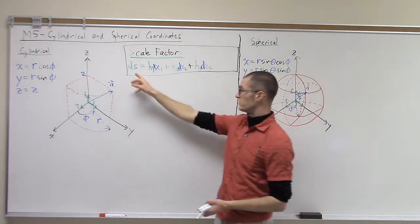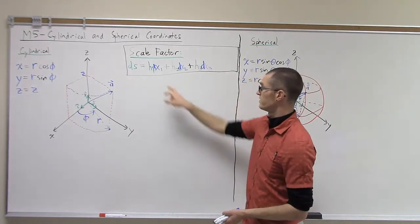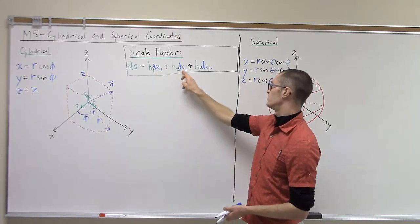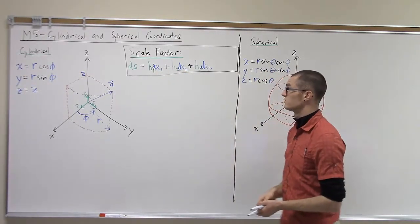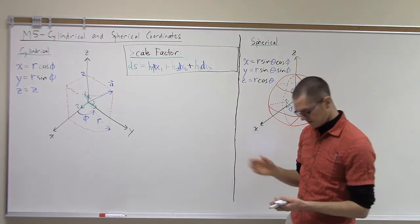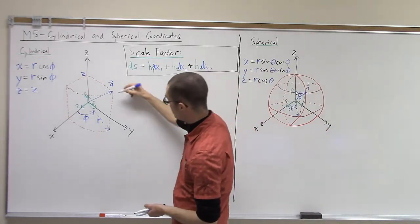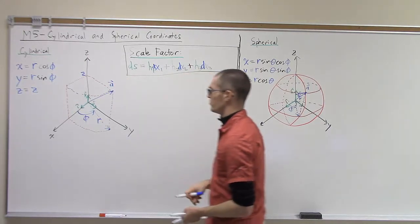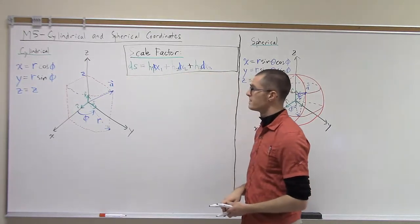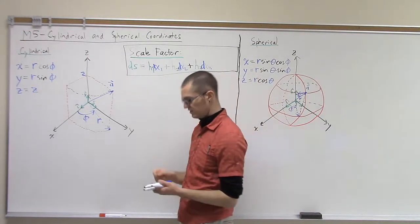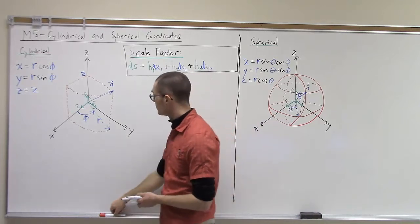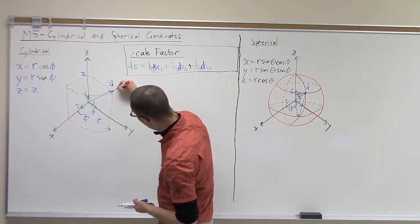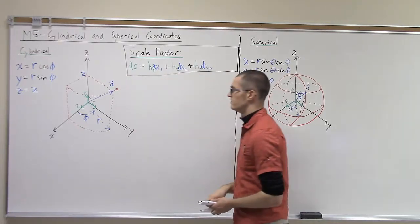To find what those scale factors are — for each of these we have dx1, dx2, and dx3 — this tells us what is a small change in path length for a small change in x1, x2, or x3. In the cylindrical coordinate system, for example, if we're located at this point here and we make a small change in r, we move a small distance in that direction.